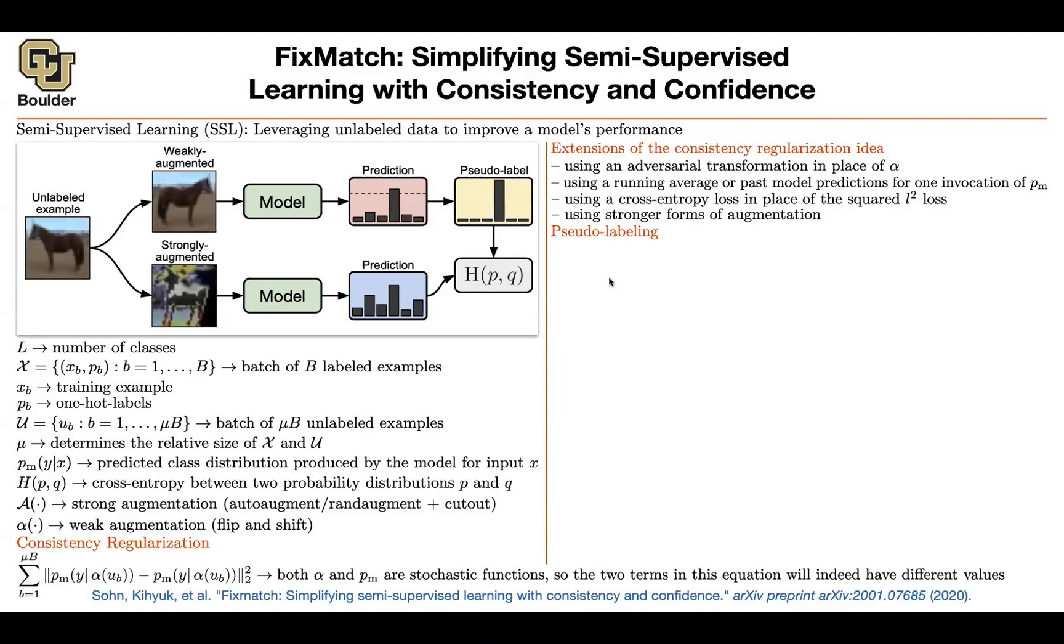There are some other ideas which are different from consistency regularization, like pseudo labeling. This should remind you of noisy students. You have your unlabeled image, label it using your model. But then look at the examples in your unlabeled dataset that your model is relatively confident. You put a threshold, which is this dash line here, and if one of these probabilities is surpassing that threshold, that example is going to be included in the training process.